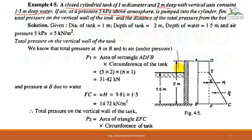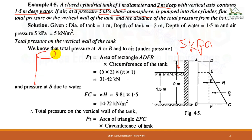If air at a pressure of 5 kPa above atmosphere is pumped into the cylinder, the pressure at the surface is now 5 kPa, not zero. This is a circular cylinder where air is pumped in, and this is the water level on which the air is pushing down and exerting pressure.